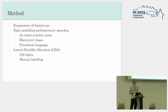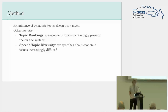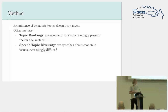I settled for 250 topics, and I did some manual labelling and also manual removing of some of the rubbish topics you often get in topic modelling. Then, looking at the prominence of economic topics doesn't say much because it also requires studying manually selected economic topics, and that risks cherry picking.